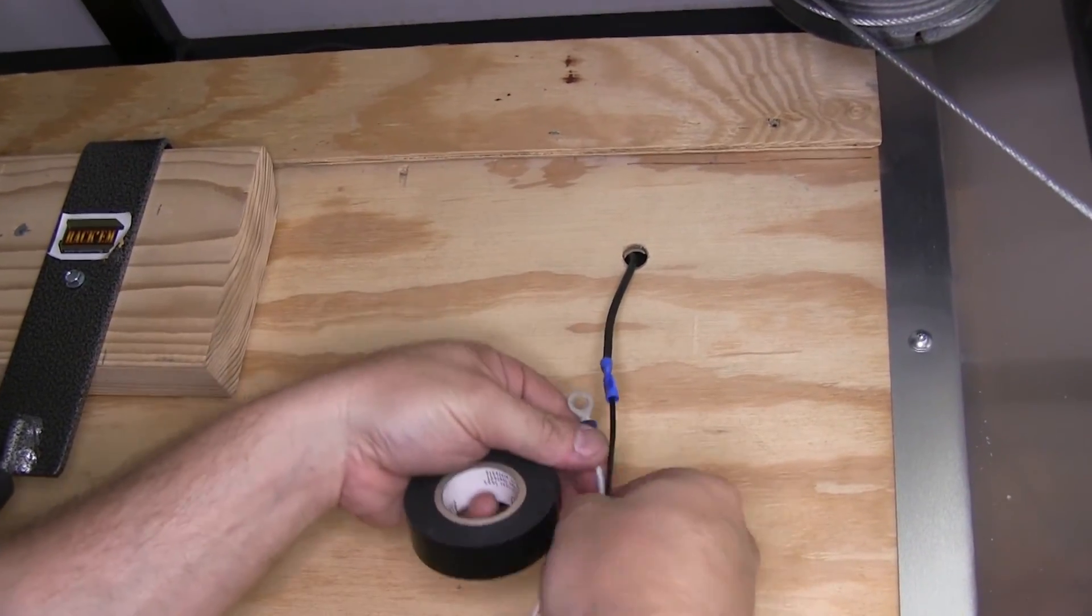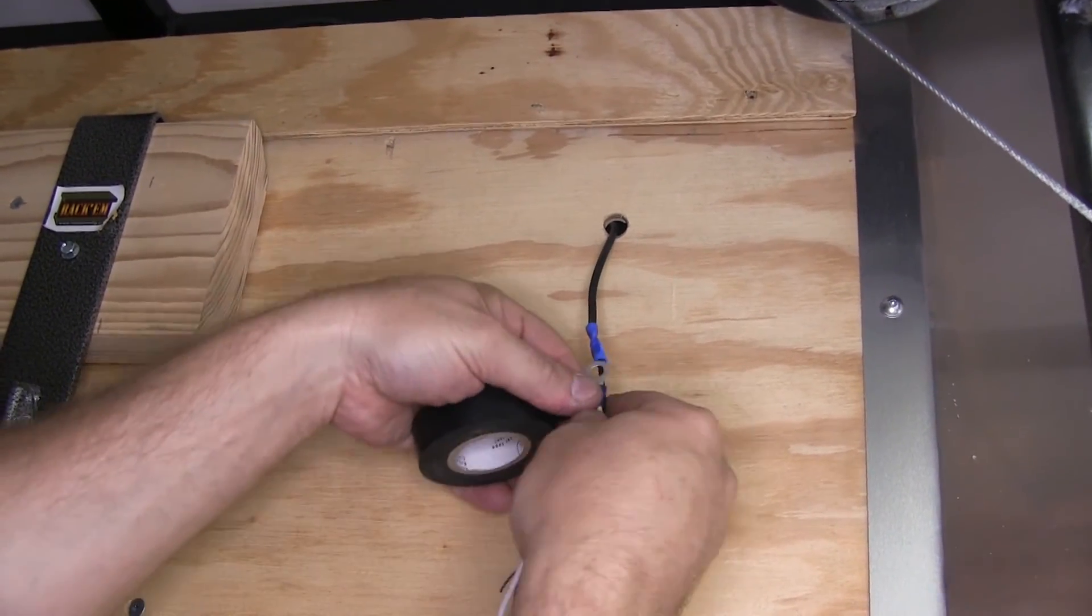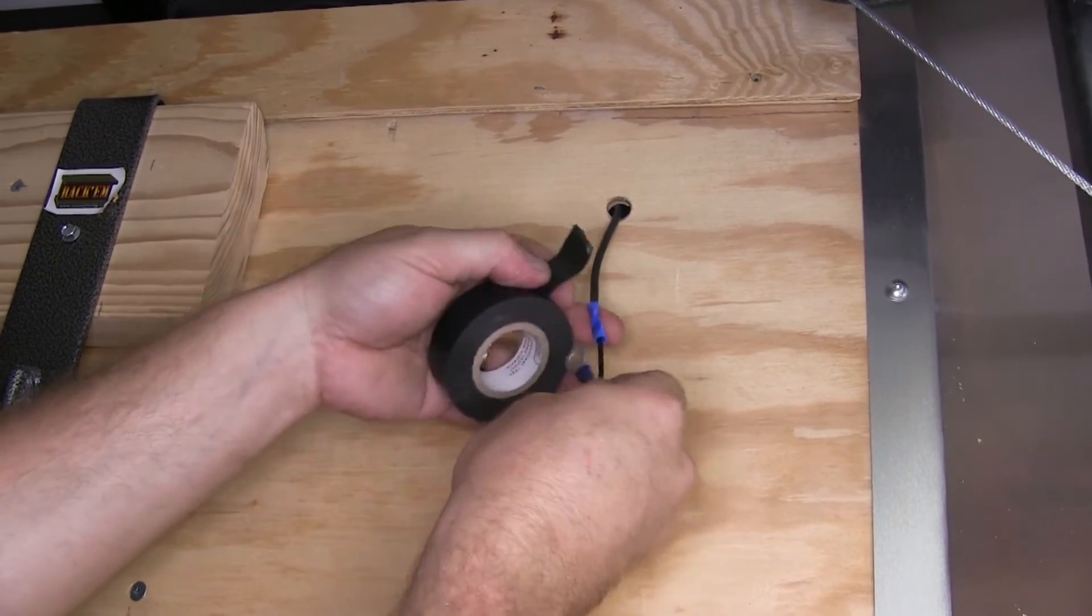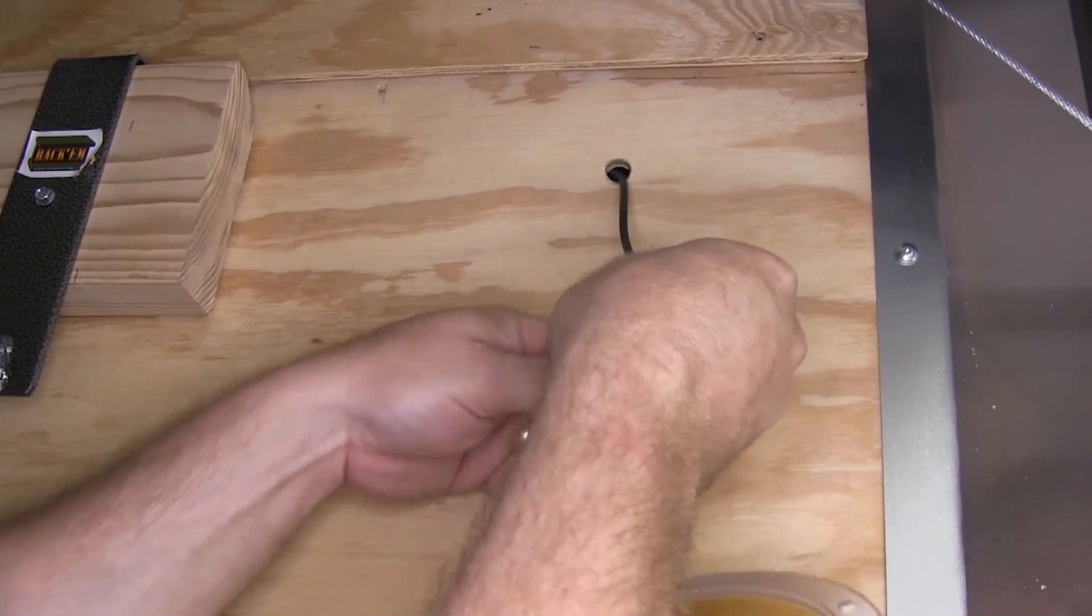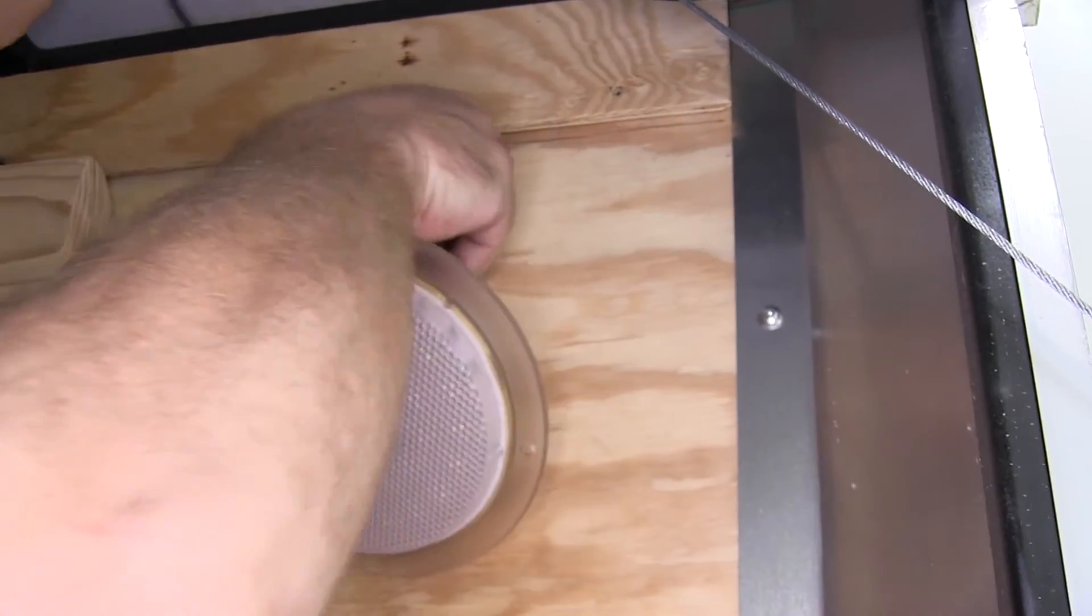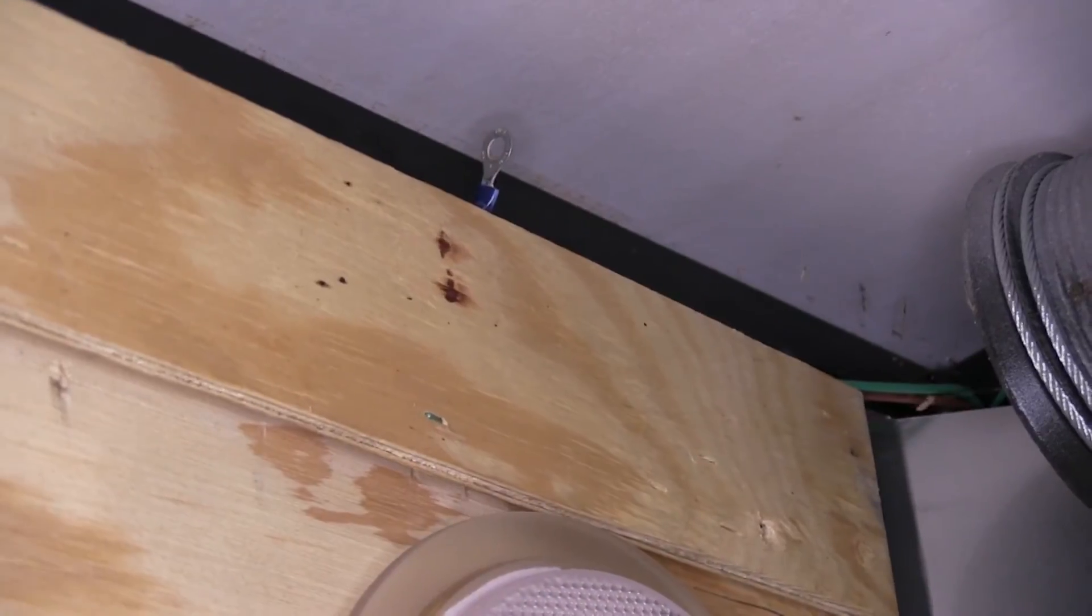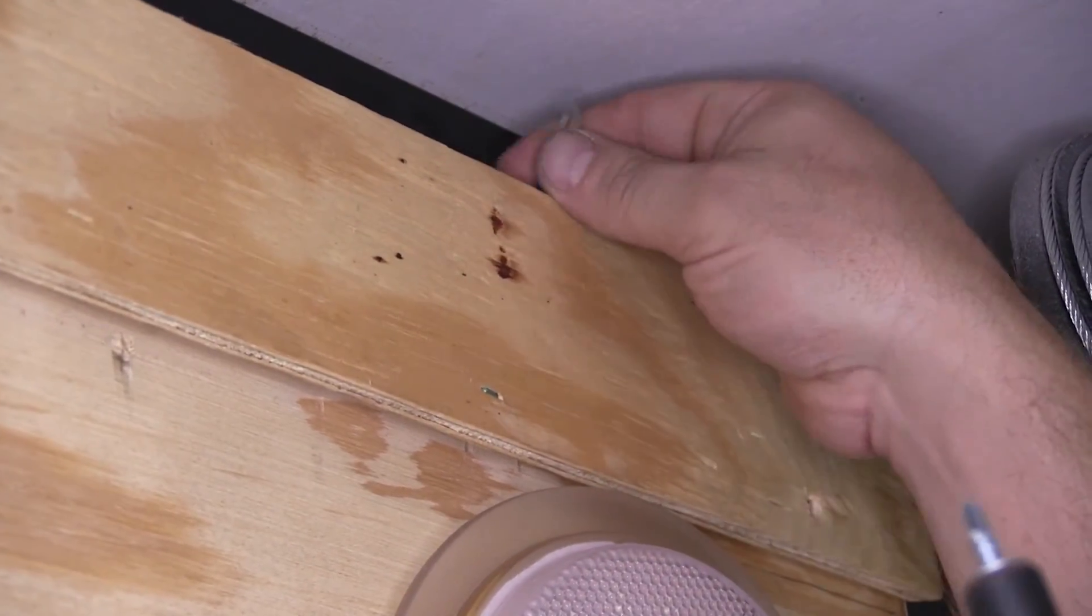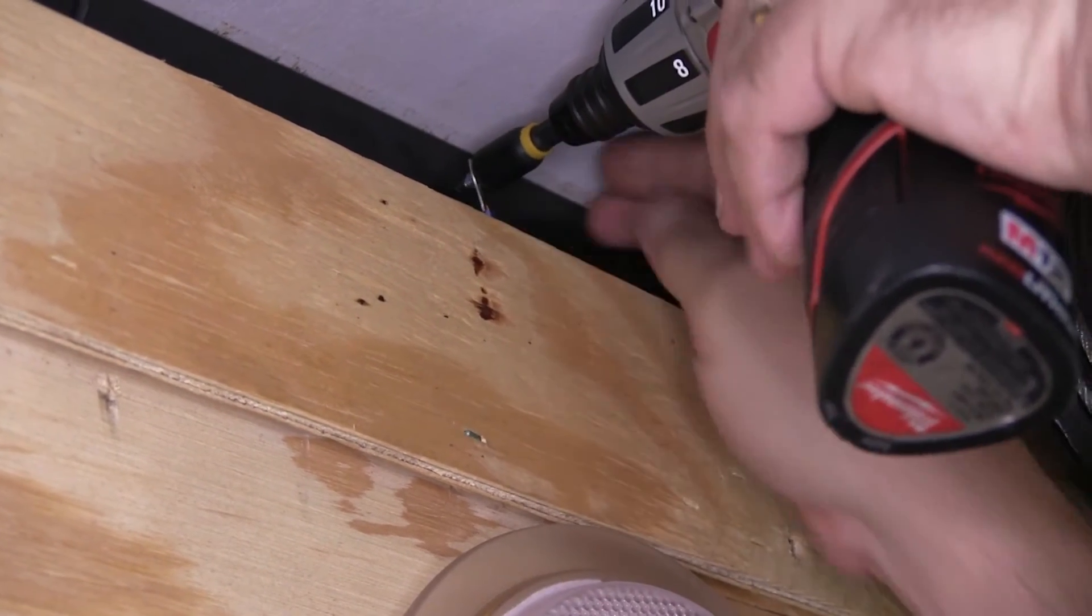To make things a little bit easier, I'm going to tape my ring terminal to the black wire so that when I pull the wire back through the wall, I can grab it up high. Now that we have our wires pulled up into place, we're going to take a self-tapping screw, go through the ring terminal and secure the white wire to the trailer's frame.